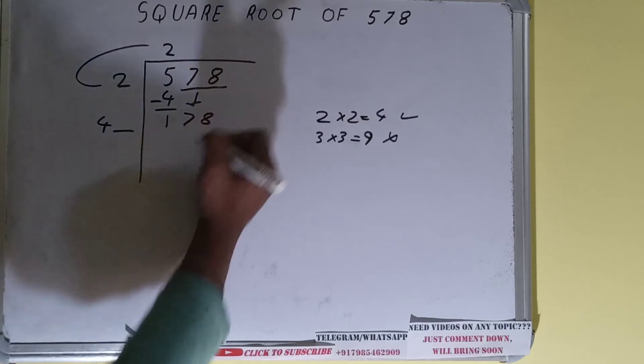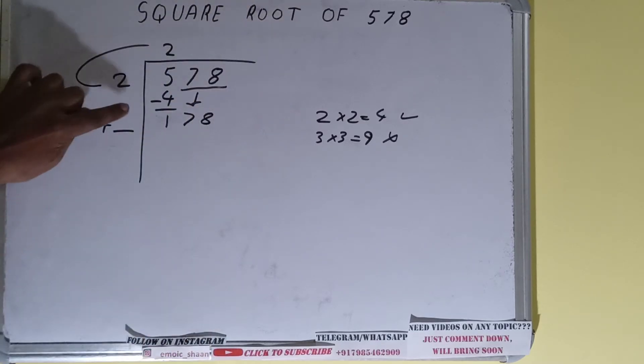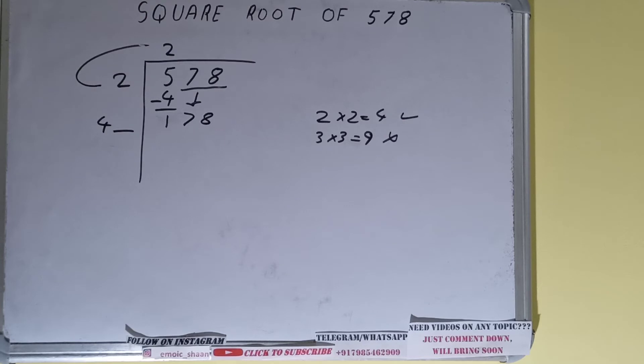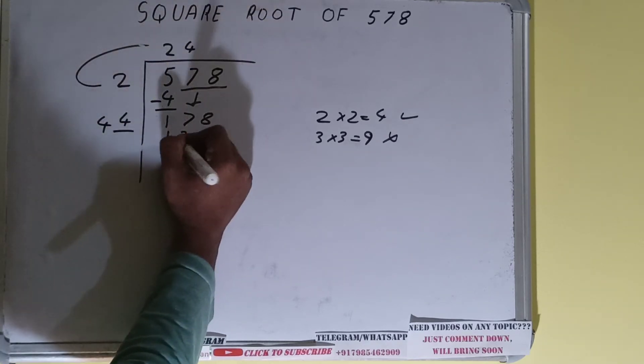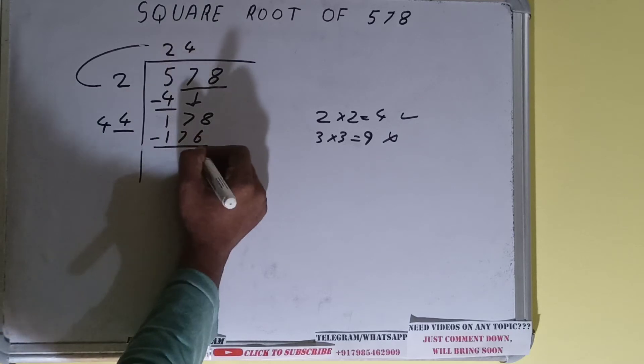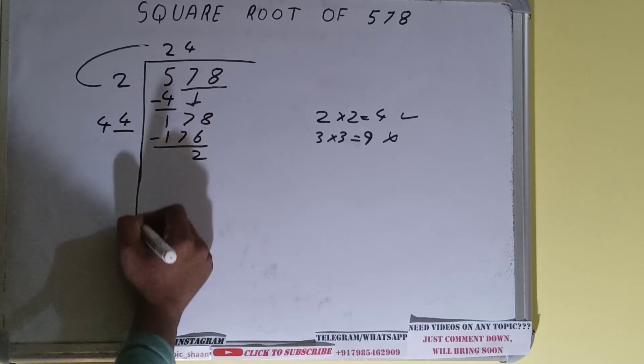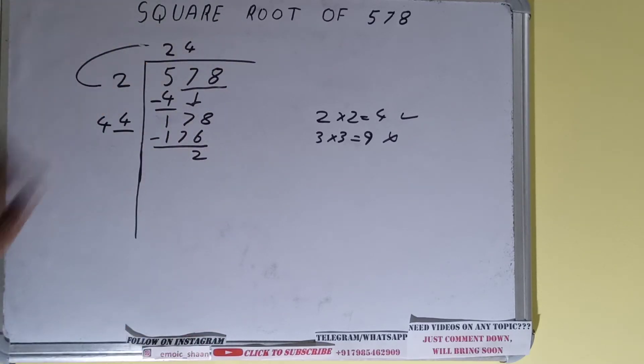Now whatever number we write here we have to write here also. So if we write 4 here and 4 here we'll get 176. Subtract and 2 will be left. Now 44 into 4 we did, so add both. So 44 plus 4 will be 48 and 1 digit extra.